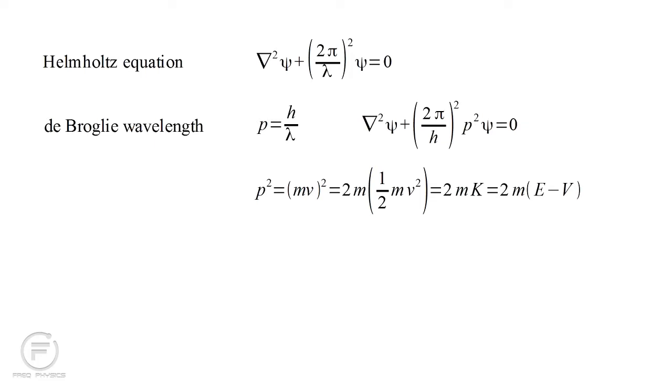Since the total energy of an electron is its kinetic energy plus its potential energy, we can write the kinetic energy as the total energy e minus the potential energy v. Plugging 2m times e minus v in for p squared, we obtain the Schrödinger equation for a single frequency in essentially the form Schrödinger presented it in 1926.